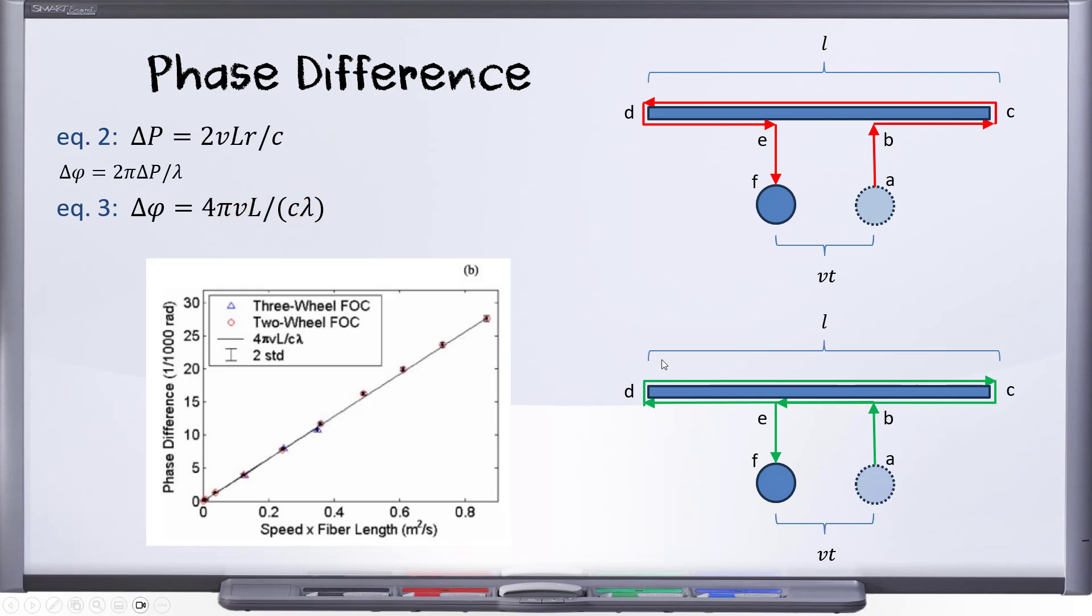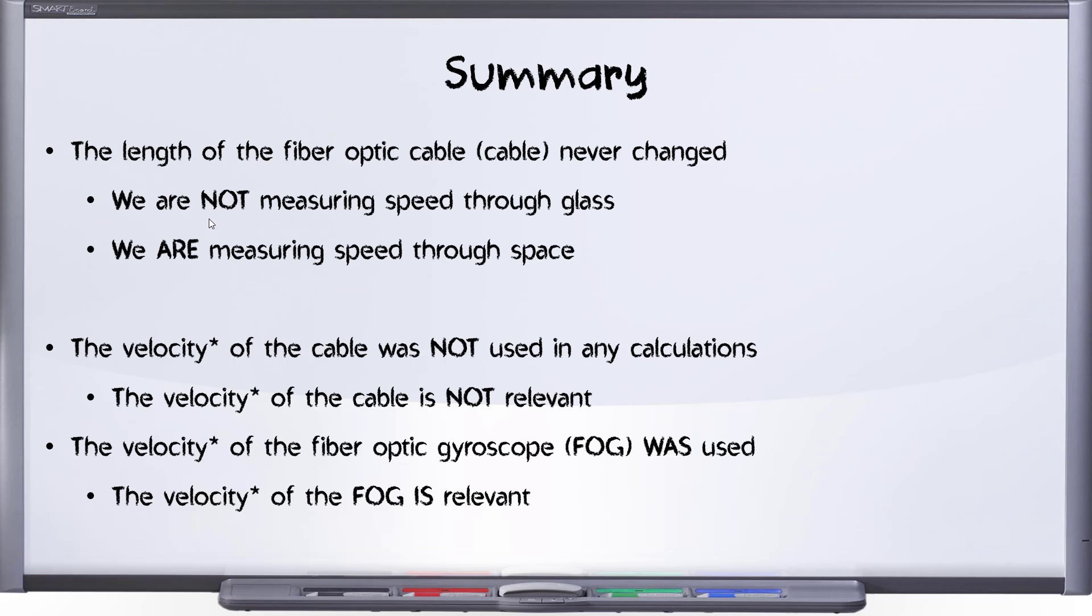So let's summarize what we've learned so far. The length of the fiber optic cable never changes—it's one cable, and the light goes through the whole cable no matter which direction it's going through—and yet we do get a fringe shift. This tells us that we are not measuring speed through glass. That's not what's causing the fringe shift, because it's the same amount of glass either way. Instead, we are somehow measuring the speed through space. The fiber optic gyro is moving through space, moving through the laboratory, and that is the speed. The speed v is the speed of the fiber optic gyroscope.